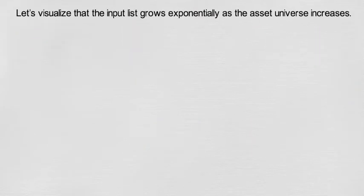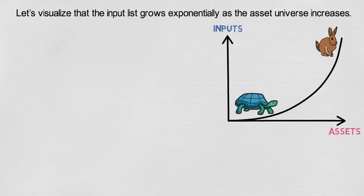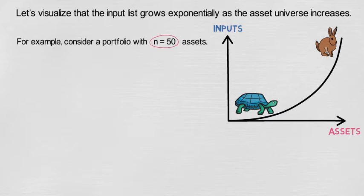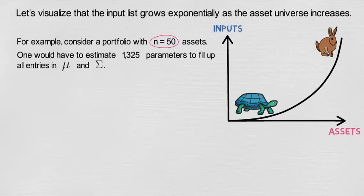Let's visualize that the input list grows exponentially as the asset universe increases. For example, consider a portfolio with n equals 50 assets. Here one would have to estimate 1,325 parameters to completely fill up all entries in the vector of expected returns mu and the covariance matrix sigma.